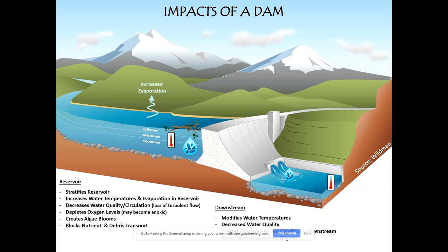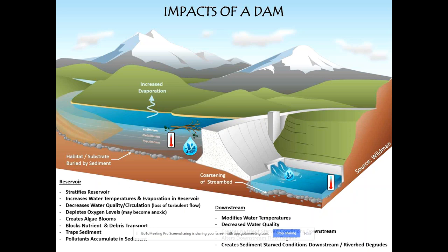Dams block debris and nutrients — some material flushes over but much accumulates within the reservoir, causing a shortage downstream. Blocking sediment is one of the largest impacts of a dam. You block sediment behind the dam and create a sediment-starved or clear water condition below it, where the river starts eating away at riverbanks and the riverbed in an effort to rebalance the sediment-water relationship. You can get degradation and coarsening of the streambed downstream. Dams also block the free movement of aquatic organisms — not just fish species, but mussels and invertebrates.